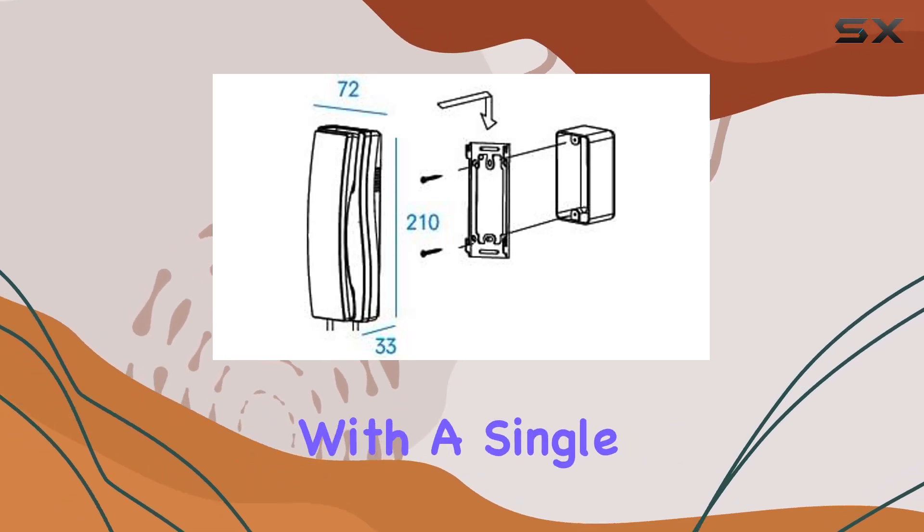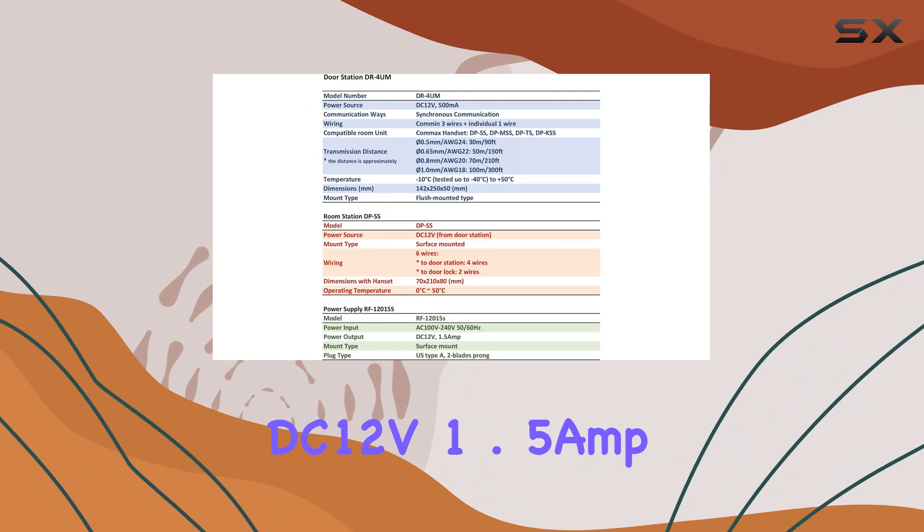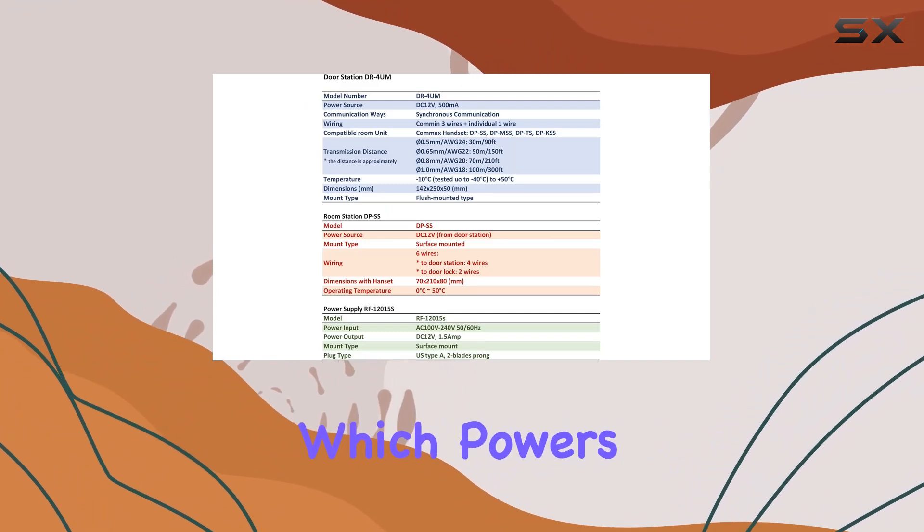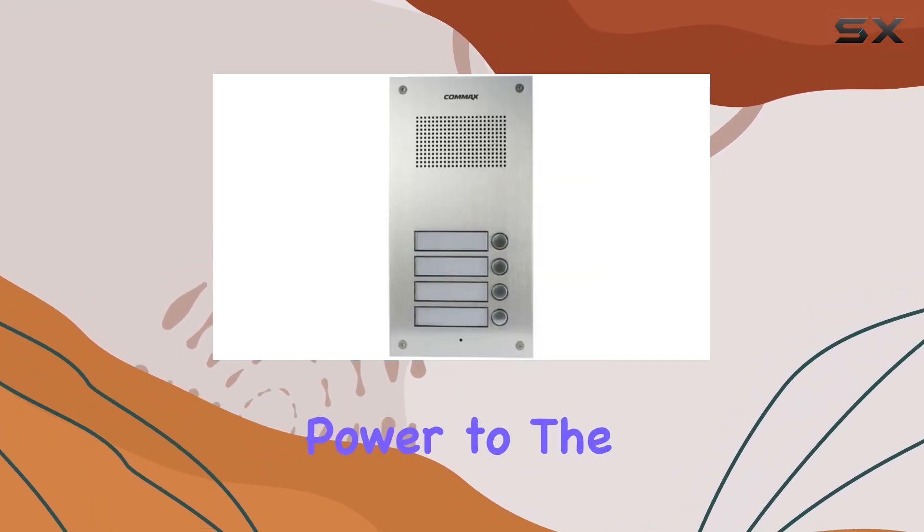Power management is efficient with a single DC-12V, 1.5-amp power source, which powers the lobby unit and distributes power to the handsets.